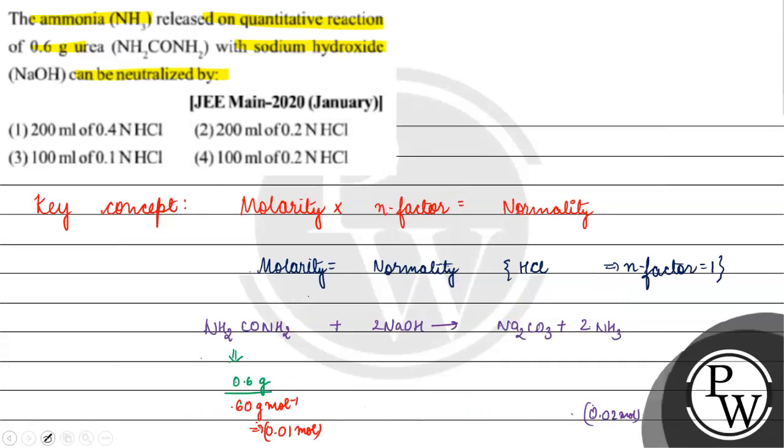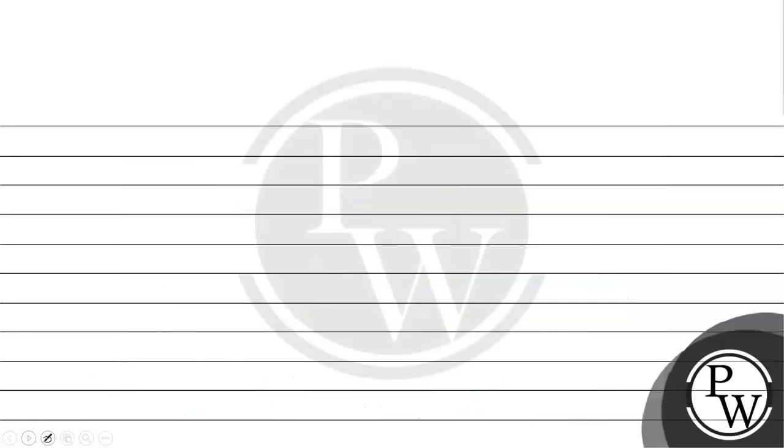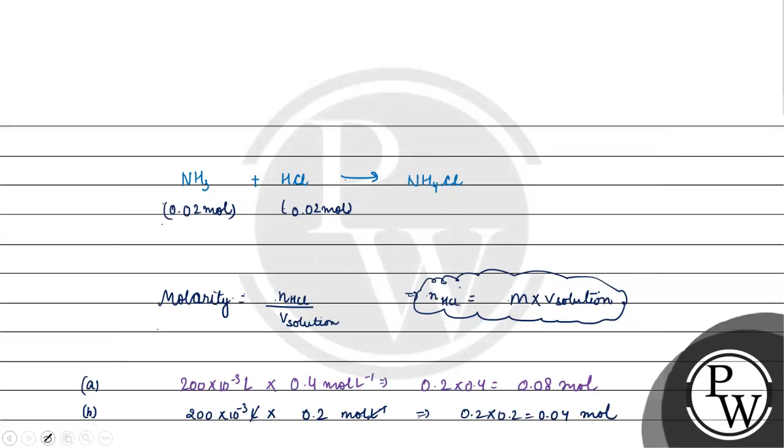Option C is 100 ml of 0.1 normal: 100 × 10^-3 × 0.1 mol per liter gives 0.01 mols of HCl. So this option is incorrect.